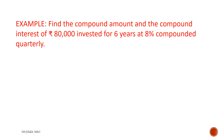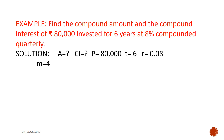In this question, the rate of interest is compounded quarterly. Principal P is 80,000, rate of interest 8% implies 0.08, time is 6, and M equals 4 because interest is compounded quarterly. Now we calculate I: I equals R divided by M. R is 0.08 and M is 4, so I equals 0.02. And N equals M multiplied by T. M is 4 and T is 6, so multiplying both gives N equals 24.